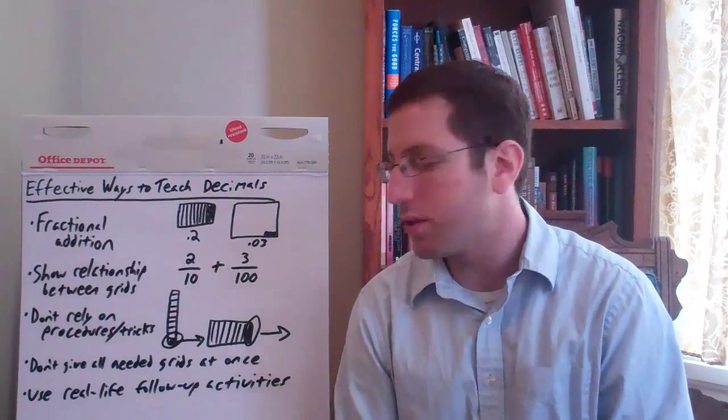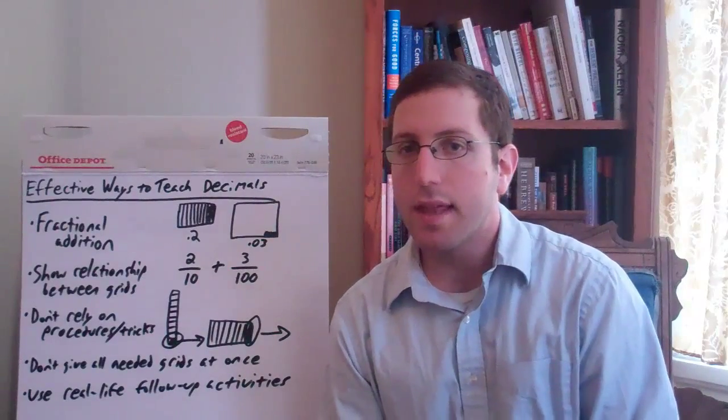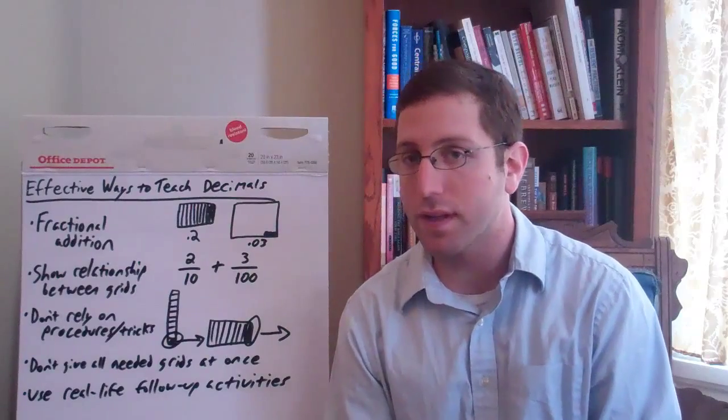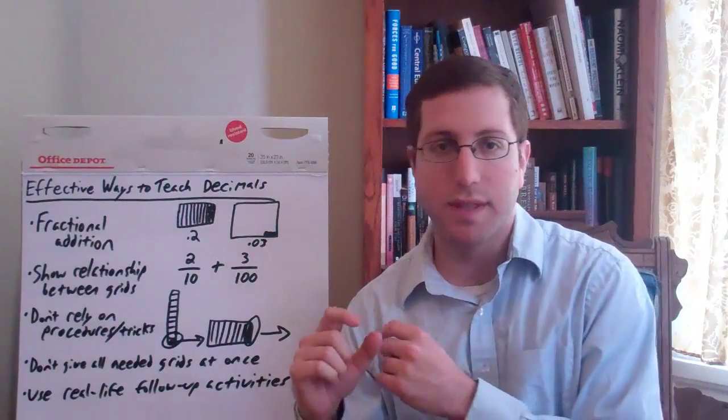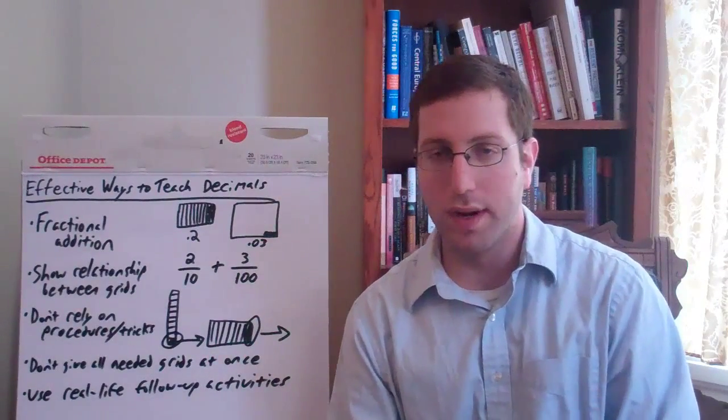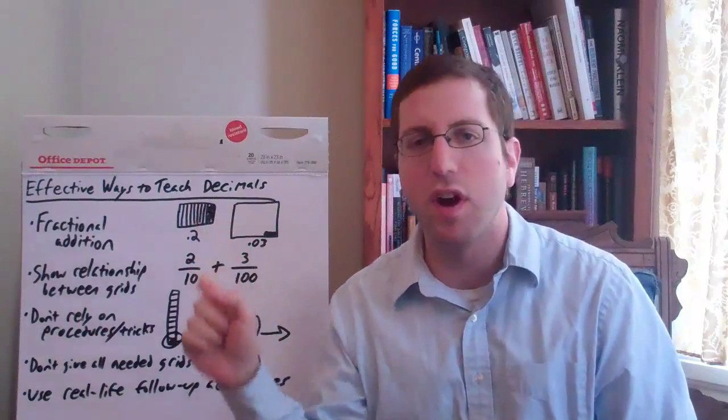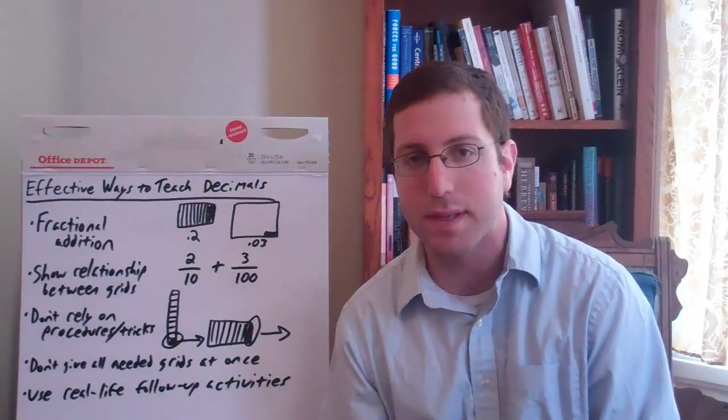A couple of other best practices that the authors suggest. Don't rely on procedures and tricks. I think as teachers we often like those little shortcuts that students can take. For example, use zeros to make sure that each decimal is of the same length, so you don't get confused by the one that only goes to the tenths and the other one goes to the hundredths. Just put a zero after the one that only goes to the tenths because it doesn't change the value, and then you can compare them easier.